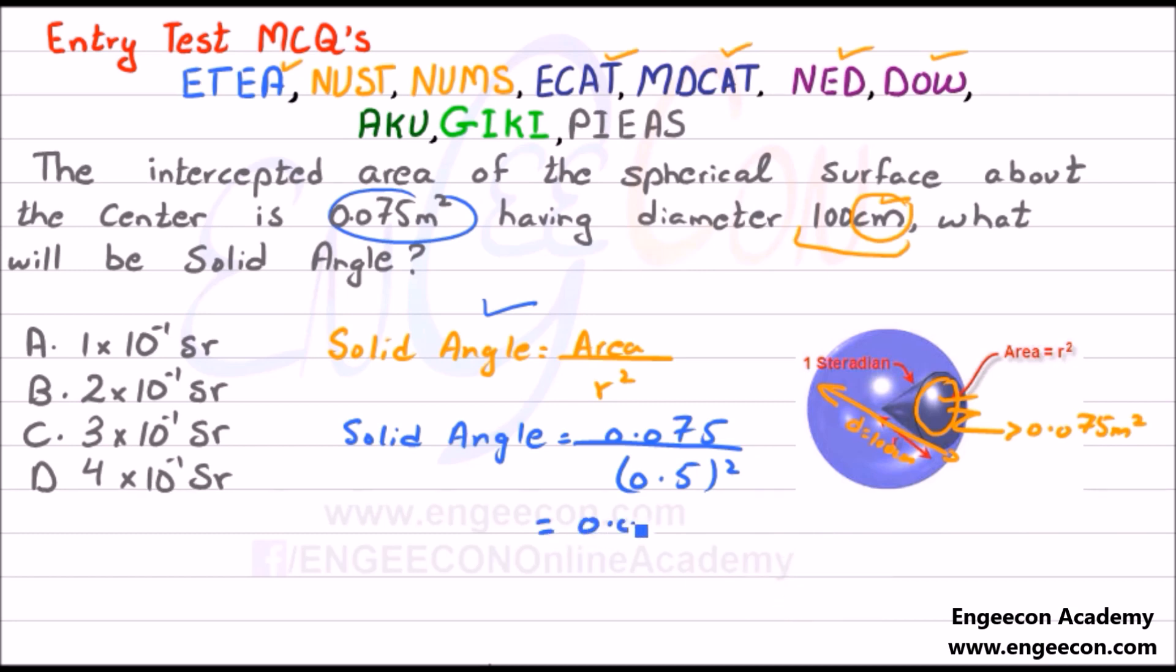So 0.075 divided by 0.25 is equal to 0.3 steradian, or we can write it as 3 × 10⁻¹ steradian.